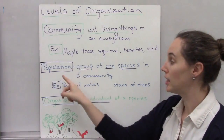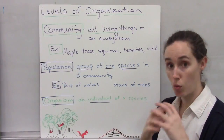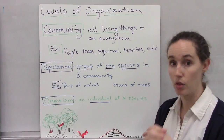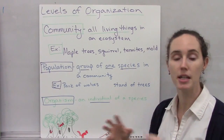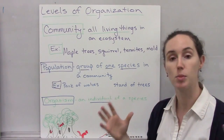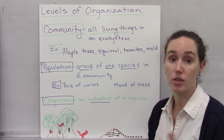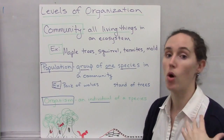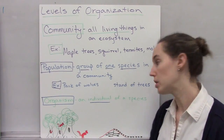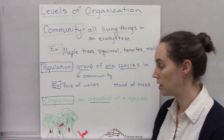A population is a group of one species within that community. A community has many different species; a population is a group of just one. For example, a pack of wolves, a flock of birds, or a stand of trees.